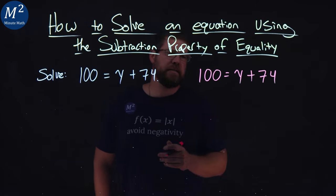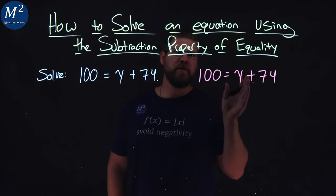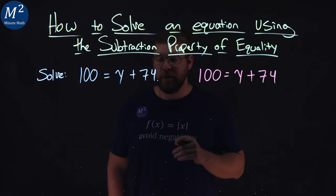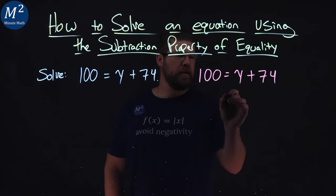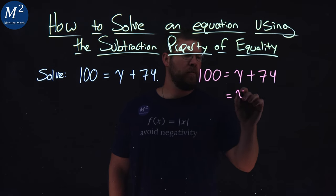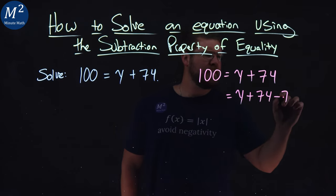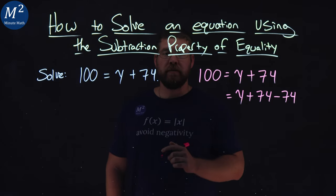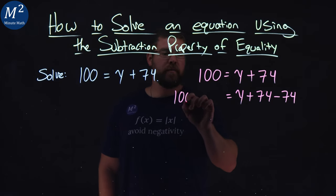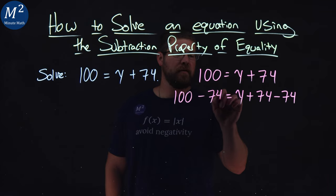Now, the subtraction property of equality states that we can subtract 74 from both sides of the equation. So to do that, I will start with the right-hand side first, y plus 74 minus 74, but I have to do it to the left-hand side as well. 100 minus 74.